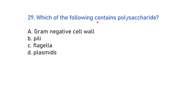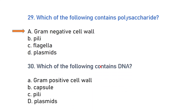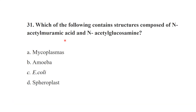Which of the following contains polysaccharides? These are mainly found in the gram-negative cell wall — N-acetylmuramic acid and N-acetylglucosamine. Which of the following contains DNA? The answer is the plasmid, which is extrachromosomal circular DNA.